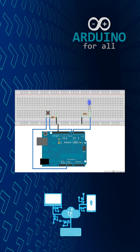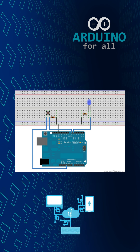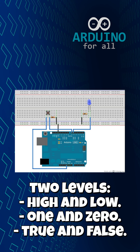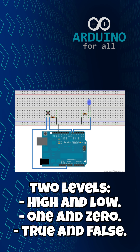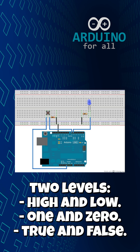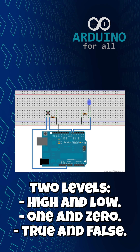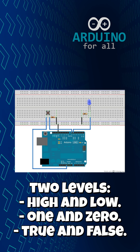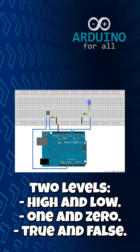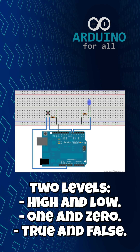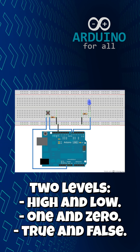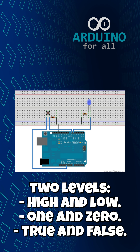Every digital system, from a basic Arduino to complex computers, relies on these same two levels: high and low, one and zero, true and false. That's what makes digital electronics the foundation of modern technology.